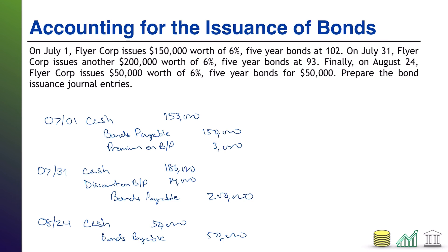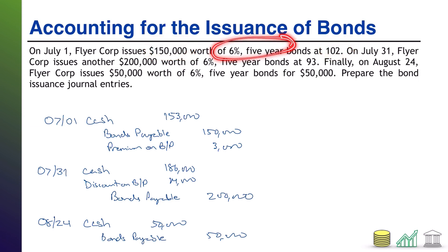One thing I want to point out, because it's sometimes a question that arises, is the unnecessary information here. I told you the interest rate on the bonds and the lifespan of the bonds. For a problem like this, where all we're worrying about is issuing the bonds, all that matters is face value and your quote. You'll need that other information if you have to manually solve time value of money calculations to figure out the market value of the bond. But if you're given a quote, the quote has done that job for you — just apply the percentage and you're good to go.